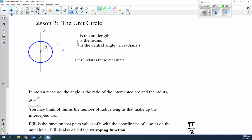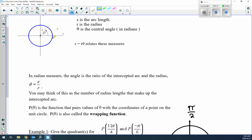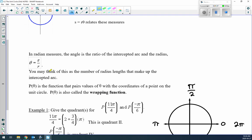Flip the page to the second part. We have s is the arc length, r is the radius, and theta is that central angle. The difference is we're going to talk about doing it in radians as opposed to degrees. In radian measurement, the angle is the ratio of the intersected arc and the radius. There's our formula: theta equals s over r.